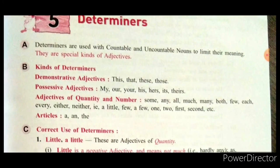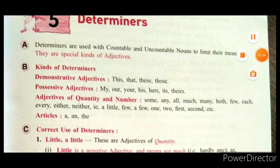Adjectives of quantity and number: some, any, all, much, many, both, few, each, every, either, neither — that is, a little, few, a few, one, two, first, second, etc. And articles are also determiners: a, an, and the.